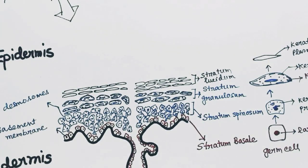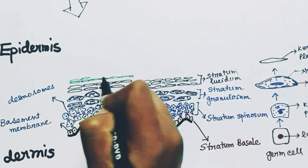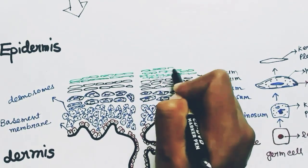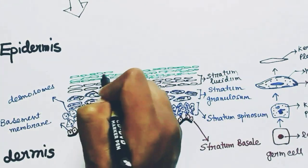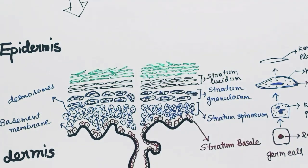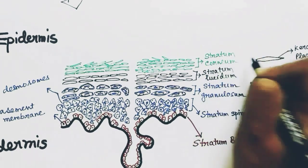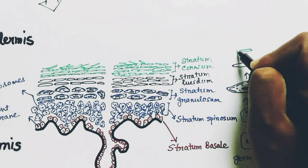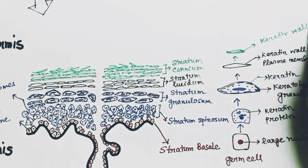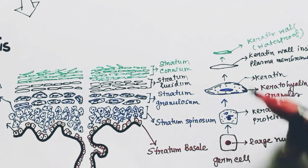The outermost layer of the epidermis is the stratum corneum layer. These are dead skin cells — they do not have any nucleus or cell organelles. They are keratinized, having a keratin wall which makes the skin waterproof. The whole process is called the keratinization process or cornification process.